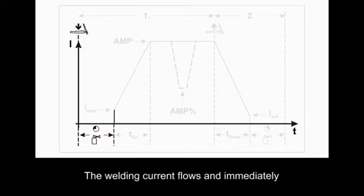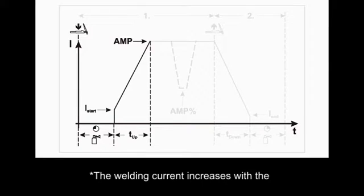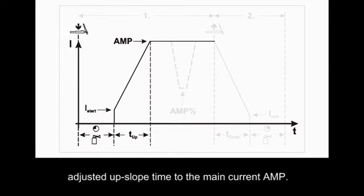The welding current flows and immediately assumes the value set for the ignition current. HF is switched off. The welding current increases with adjusted upslope time to the mean current.